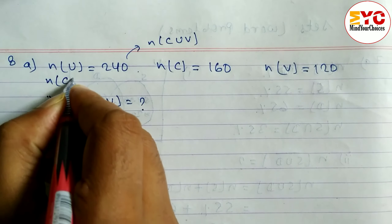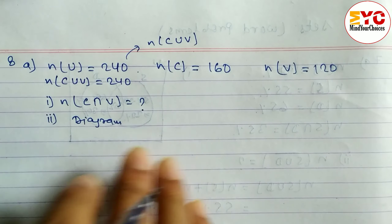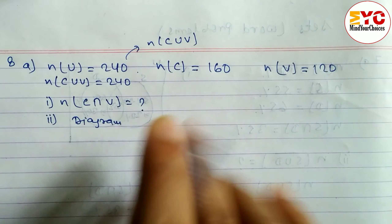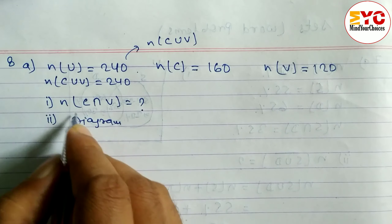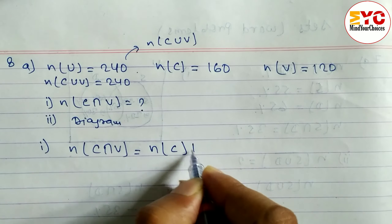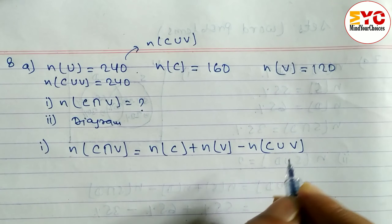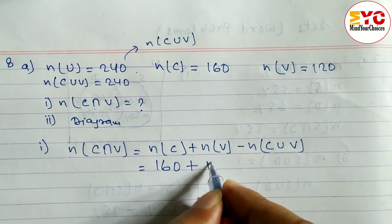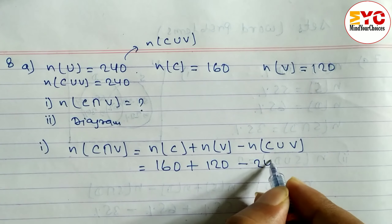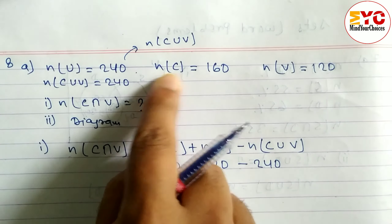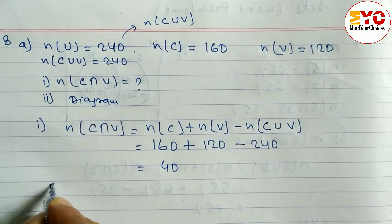There is no complement here — each and every student likes either cricket or volleyball or both. So n(C ∪ V) is also 240. To find n(C ∩ V), we use the formula: n(C) plus n(V) minus n(C ∪ V). That is: 160 plus 120 minus 240, which gives us 40. So 40 students like both cricket and volleyball.